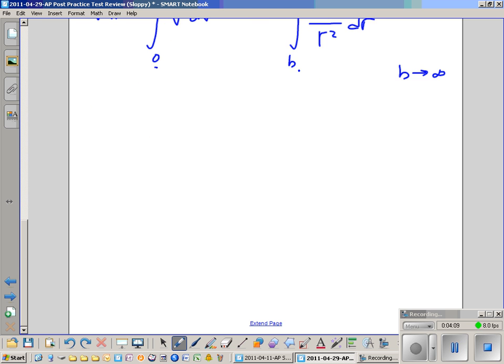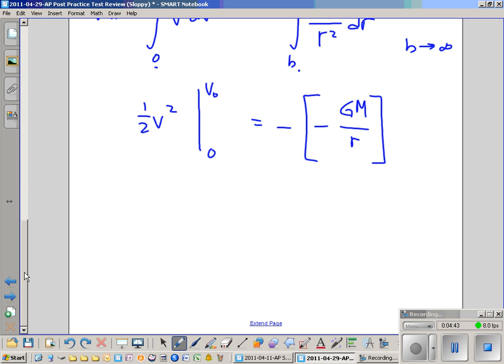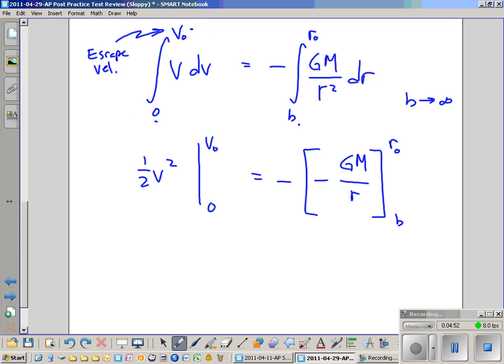Now we have our limits of integration. We have the integral of v dv is one half v squared, and we're going to evaluate that from zero to v naught. We're going to make that equal to the integral of this, which is going to be, remember this was negative, and the integral of this is negative as well. So we get negative GM over r. I'm going to move this up here. So that makes that positive, doesn't it? We're going to evaluate that from b, where b is approaching infinity, to r naught, back to Earth's surface.